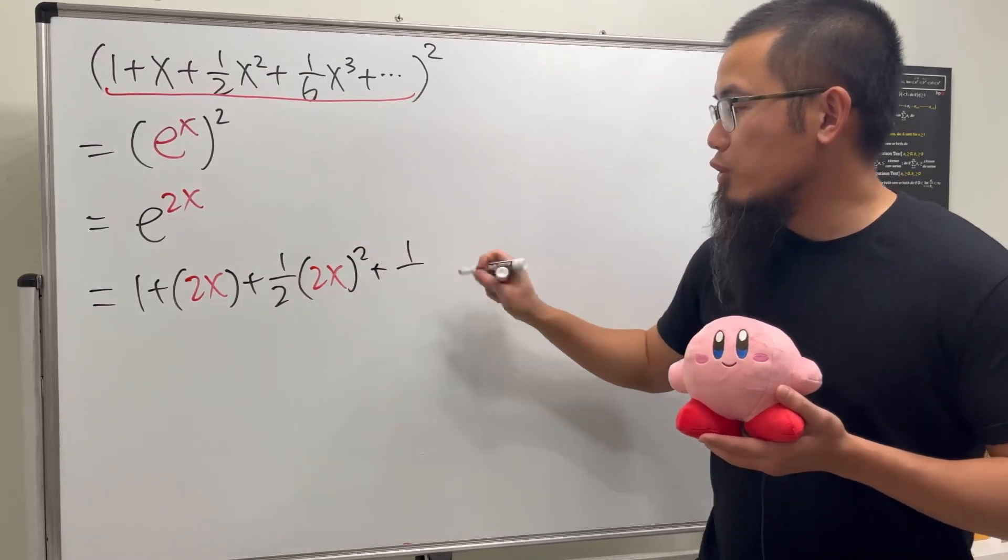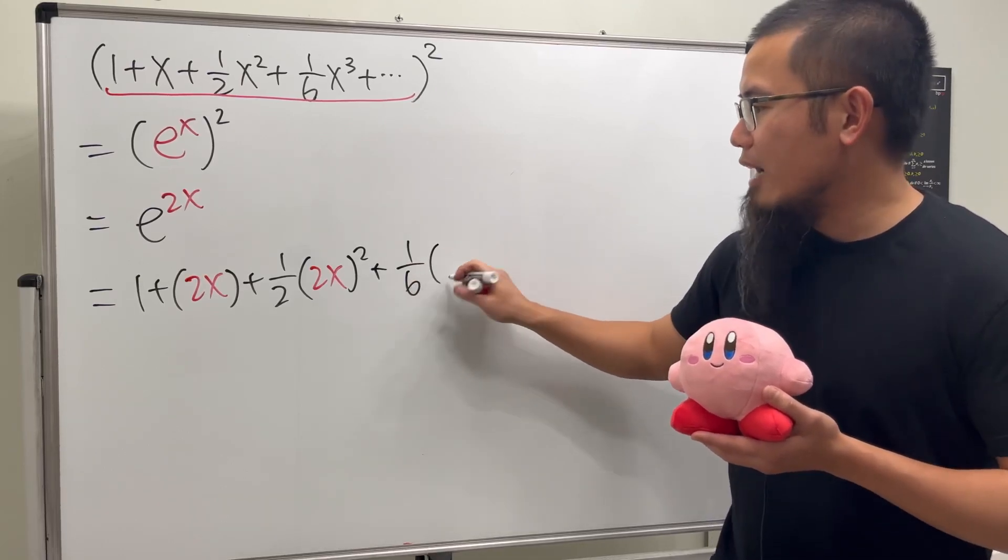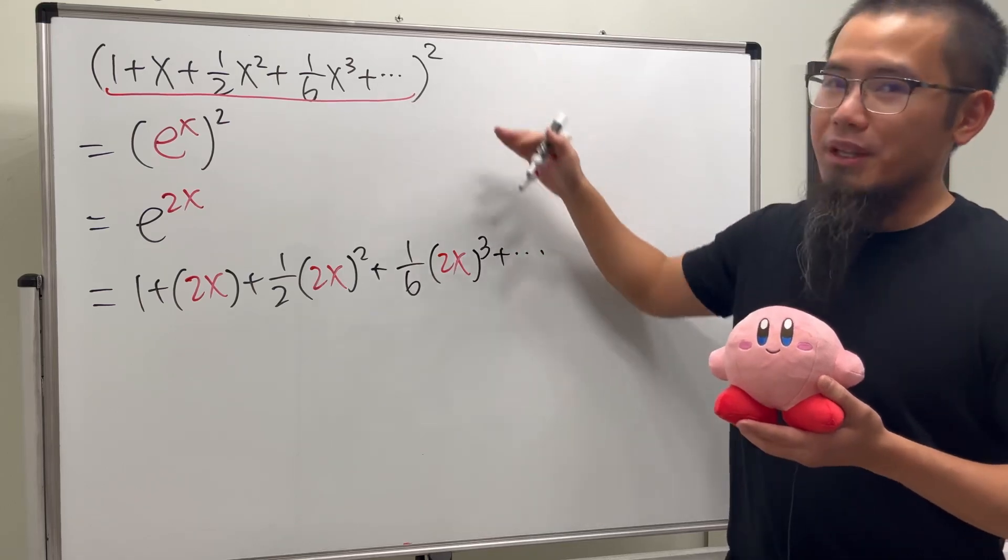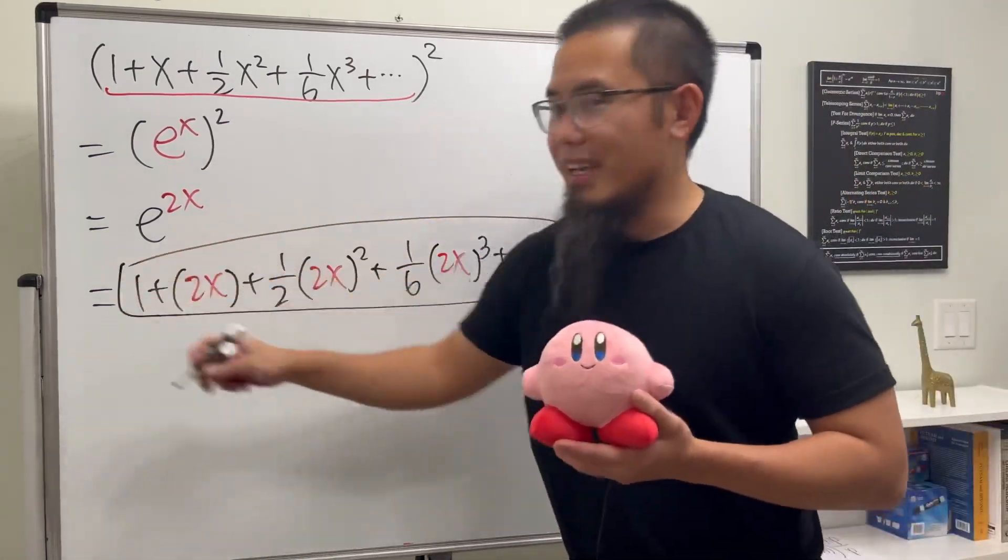And then 1 over 3 factorial, which is shown to be 6, and then we have 2x raised to the third power, and then so on and so on. So this right here is just equal to that. This is very nice, huh?